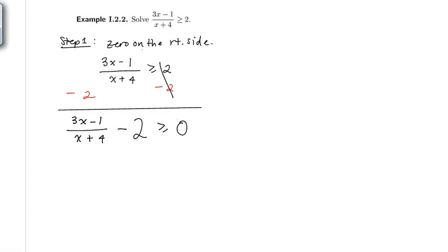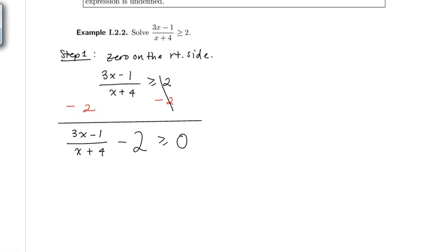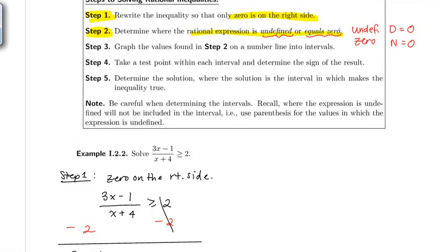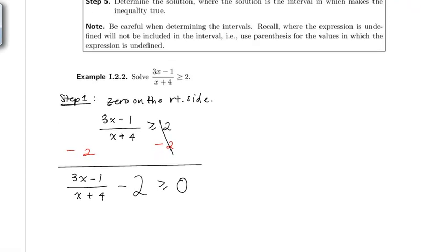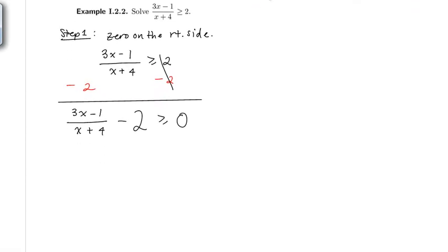Step one is complete — we have zero on one side. To move on to step two and find where the left side is undefined or zero, I need to set the denominator and numerator equal to zero. However, notice the left side doesn't have one single fraction like in the previous example. I need to go ahead and combine these two terms so that I have one fraction on the left side.